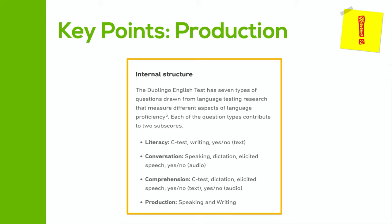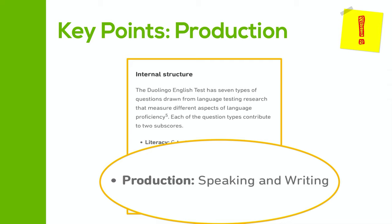The Duolingo English test has seven different question types in total, and if you go to the Duolingo English test website, you can find information on all of these different question types. The ones we're going to focus on today is of course the production element. We can see that the production subscore is made up of your speaking and writing, but there are different kinds of speaking and writing questions on the Duolingo English test.